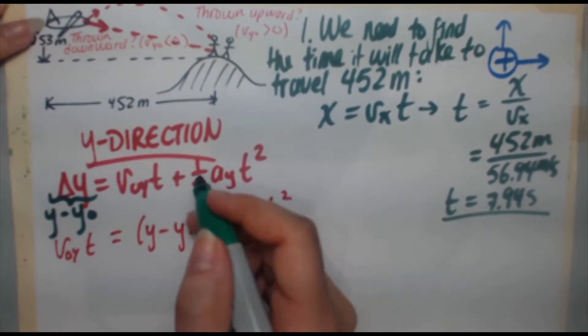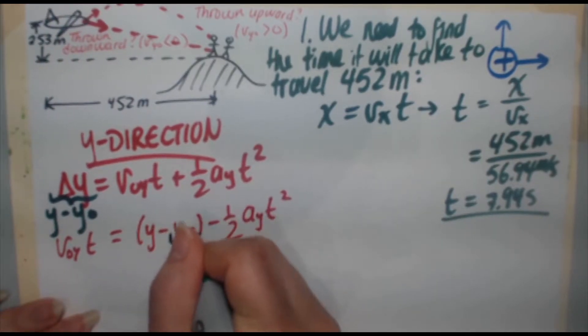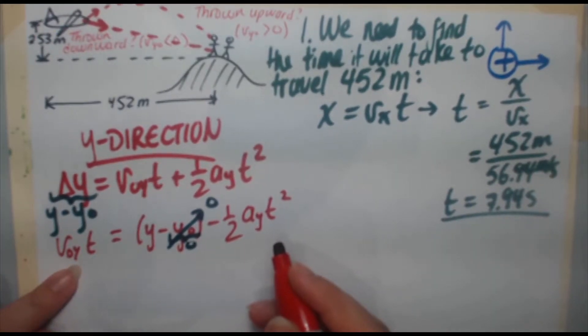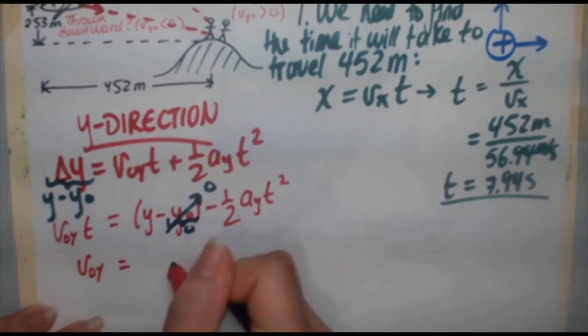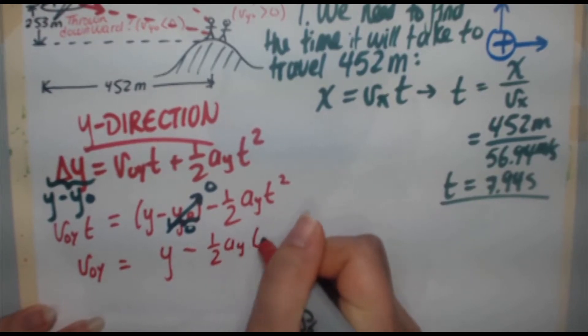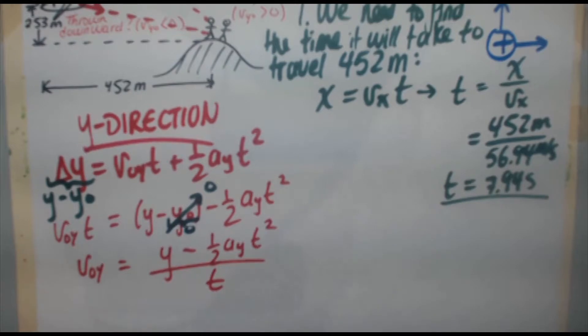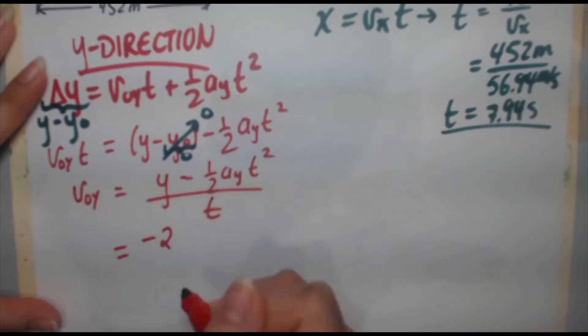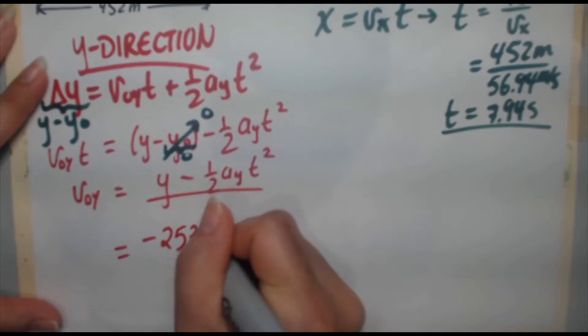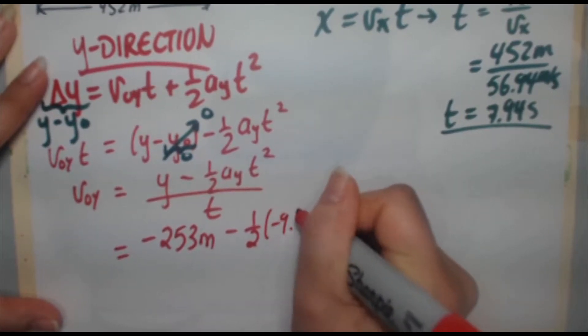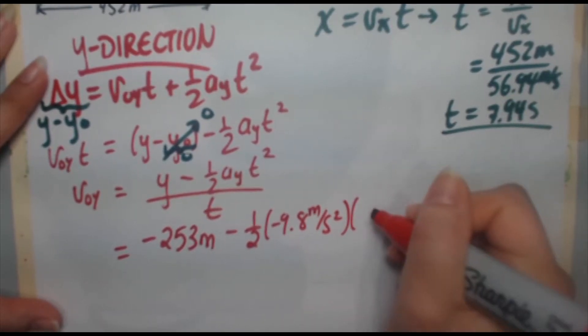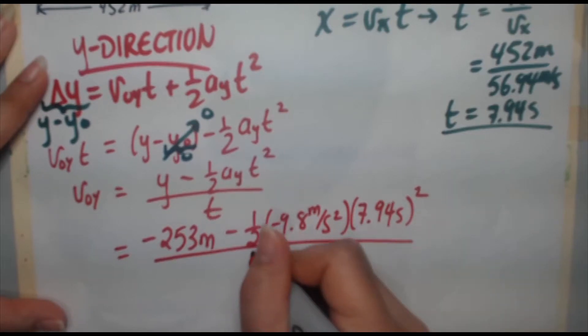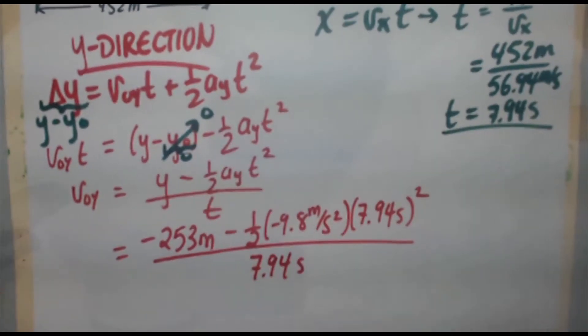Remember, the initial Y height we're stating to be zero. So if this is zero, that disappears. And I want to get V not Y by itself, so I'm going to divide both sides by T. So I'm going to get V not Y equals Y minus one half acceleration Y T squared divided by T. So at this point, you know everything, you just have to plug in your numbers. So our Y is negative 253 meters minus one half times negative 9.8 meters per second squared times our time, 7.94 seconds. That has to be squared divided by 7.94 seconds.